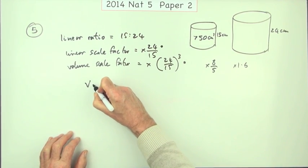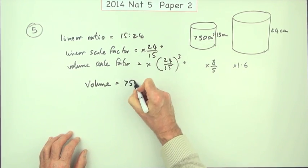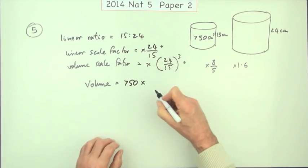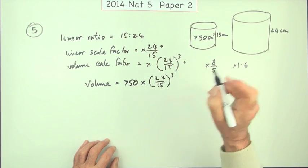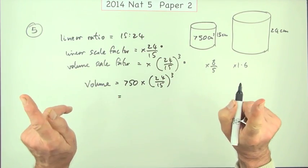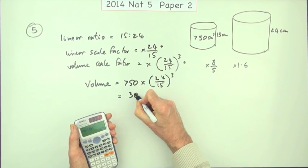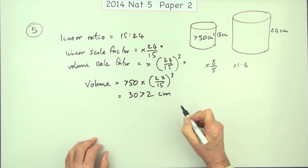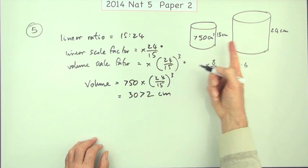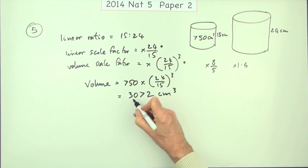So how do we get the answer? What is this volume that I'm looking for? Well, it'll be the volume of the smaller one, multiplied by the appropriate factor, which is 24 upon 15 cubed, because it's three-dimensional. Pop it in the calculator. And when you put it in, you get 3072. Not your third mark yet. You have to have the units in this case, because it's volumes. And so even though you see centimeters, it's centimeters cubed. Now, both parts are required for the final mark.